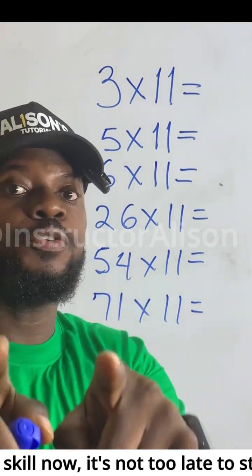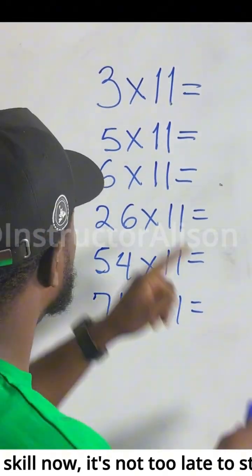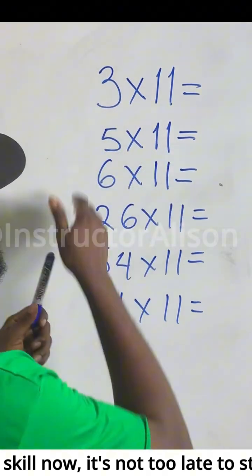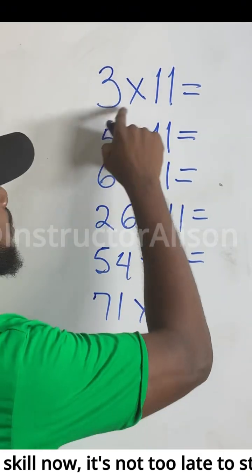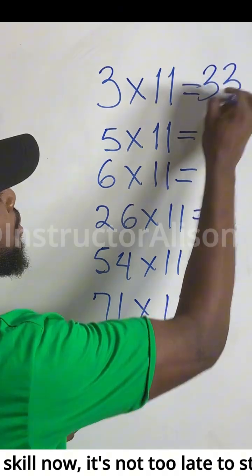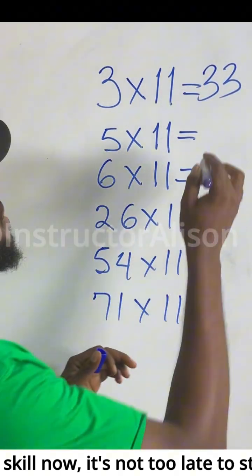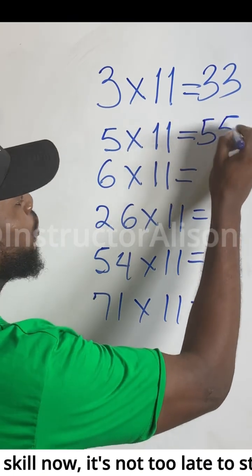If I bring updates, come show you finish. Try the share. You know say 3 times 11, any single number times 11. 3 times 11 will give you 33. You know that one. 5 times 11, you know that's 55. All of us know that one.